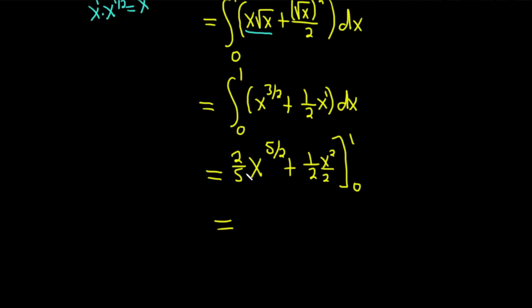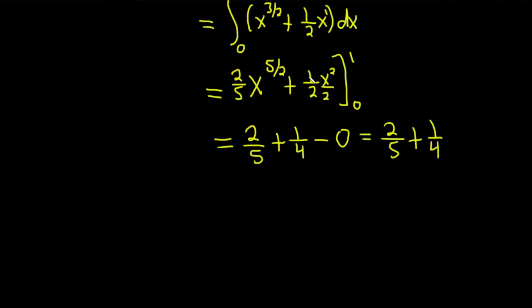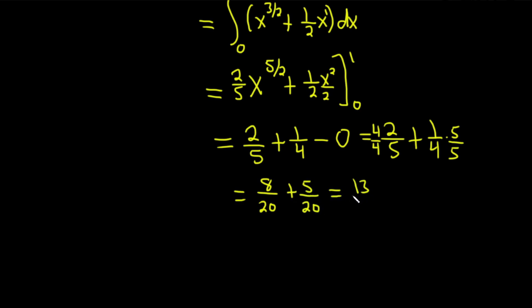Plugging in 1 first: 1 to the 5/2 is 1, so we get 2/5, plus 1 squared over 2 which is 1/4. Then plugging in 0 gives everything as 0. We end up with 2/5 plus 1/4. Finding a common denominator: 2/5 times 4/4 gives 8/20, and 1/4 times 5/5 gives 5/20. Adding them gives 13/20.